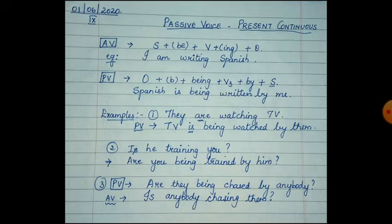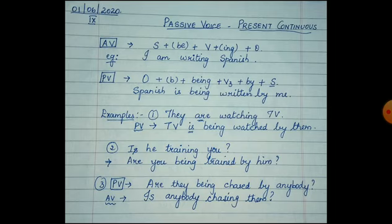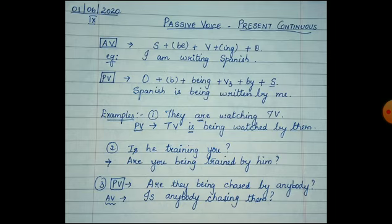Let's look at an interrogative sentence: 'Is he training you?' The subject is 'he' and the object is 'you.' 'You' is a second person pronoun, so we do not use 'is' in front of it. When the object 'you' comes to the subject's place, we use 'are.' Also, since it's a question, the be verb comes at the beginning of the sentence. So the passive voice is: 'Are you being trained by him?' — 'are' is the be verb at the beginning, just as 'is' was at the beginning of the active sentence.